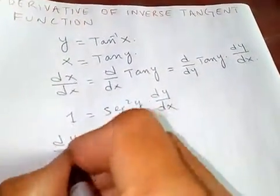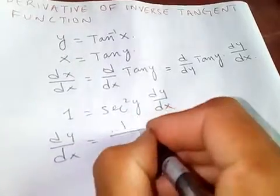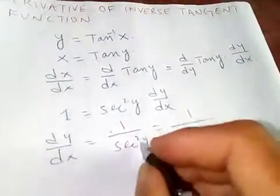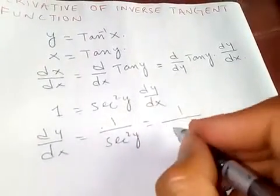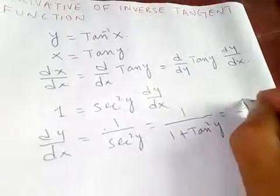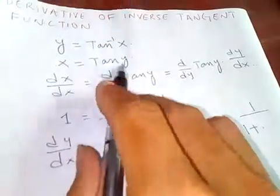Now let's find out dy by dx. dy by dx equals 1 over secant square y. We know secant square y is 1 plus tan square y, which is 1 over 1 plus, tan y is x, x square.